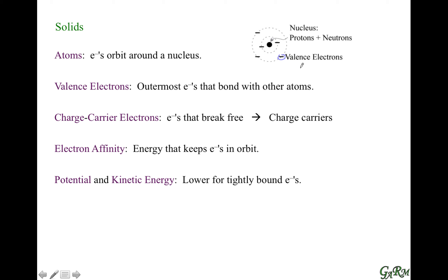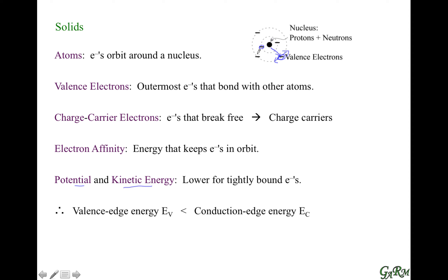All electrons have potential and kinetic energy. Potential energy refers to the energy they have relative to their nucleus — the further away from their nucleus, the higher the potential energy. If electrons are moving more, due to thermal energy for example, they have higher kinetic energy. Tightly bound electrons don't move much and are closer to the nucleus, so they have lower potential and kinetic energy. That means valence electrons, in the outermost shell, have lower energy than electrons that break free. Free electrons have higher energy.